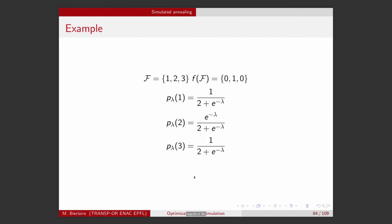Let's take an example. I take a case where I have three feasible solutions — one, two, three — and the value of the objective function is zero, one, zero. Therefore, I have two optimal solutions, one and three, with value zero, and one non-optimal solution, two, with value one. These are the probabilities as defined before, as a function of the parameter lambda.